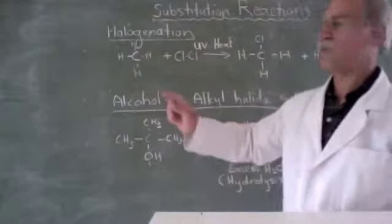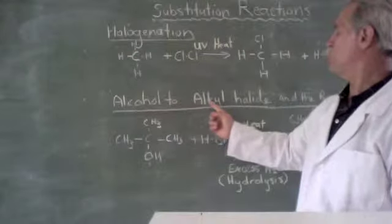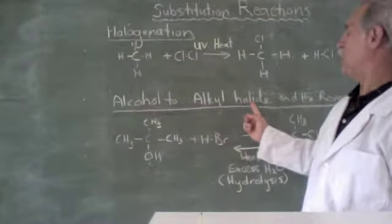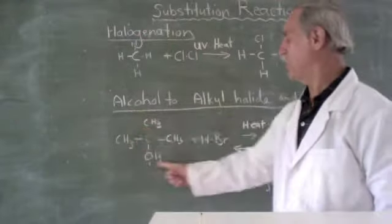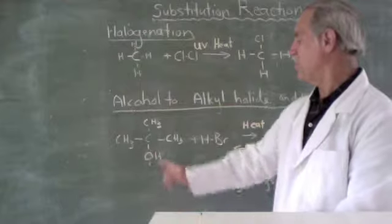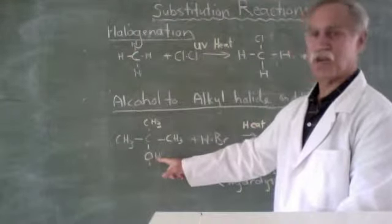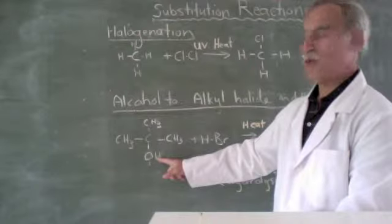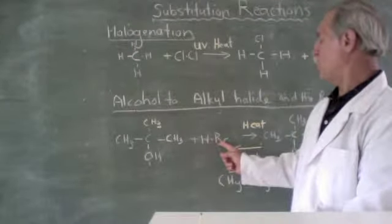Now let's have a look at the second type of substitution, where an alcohol goes to form an alkyl halide. So let's start with this. It is an alcohol. And notice we know it's an alcohol because it's got an OH group.